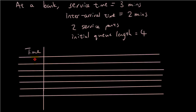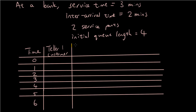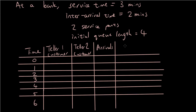So the time in minutes will be from zero, one, two, three, four, five, six. You can think of zero as, for example, nine o'clock to start off. And let's do customer served by teller one, and then teller two customer, because there are two service points. And let's write a list of arrivals, and let's do customers in queue, and then queue length.